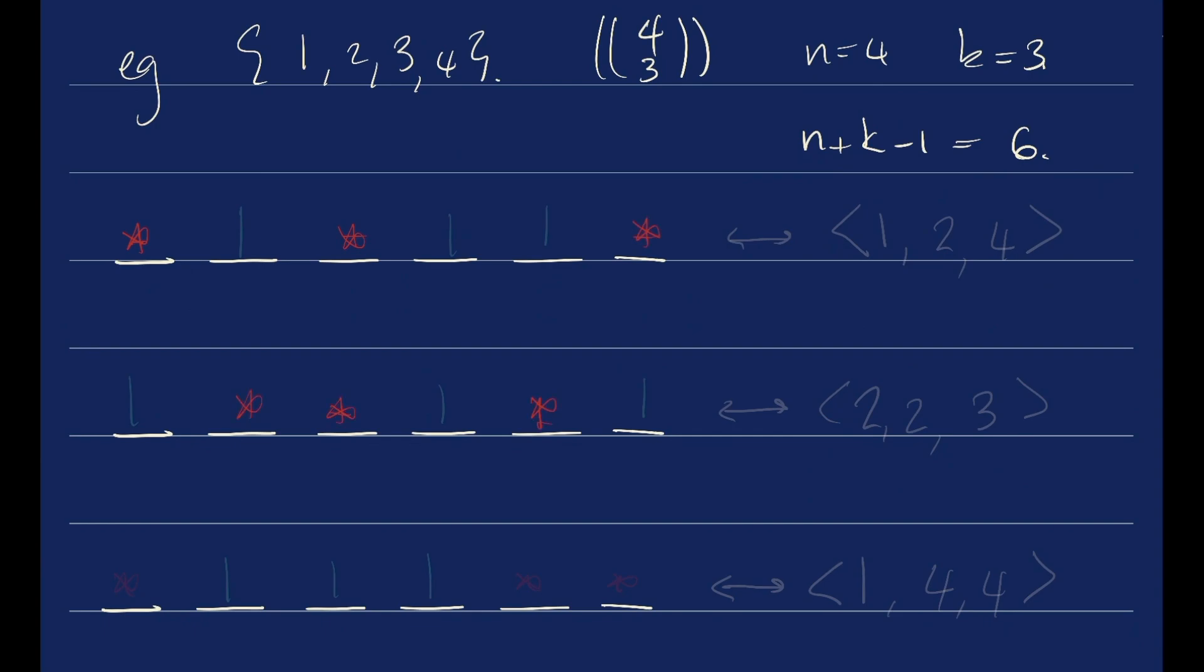So I'm going to choose 3 of these to be stars in different configurations, and then the rest of them are going to be bars. And then we can see what multi-set this corresponds to. So this is going to be 1, 2, no 3s, and then a 4.